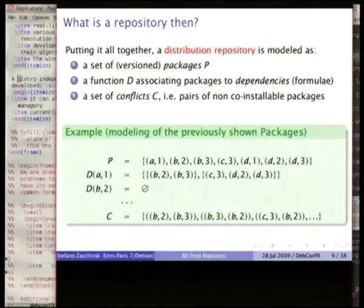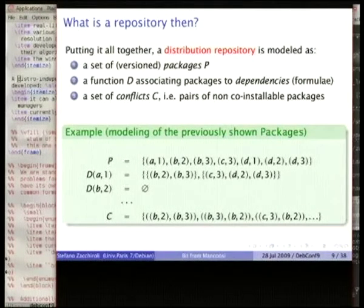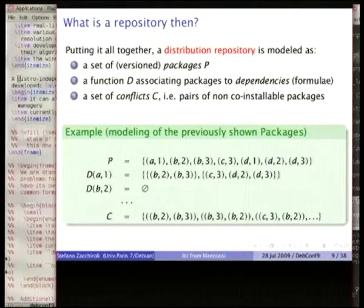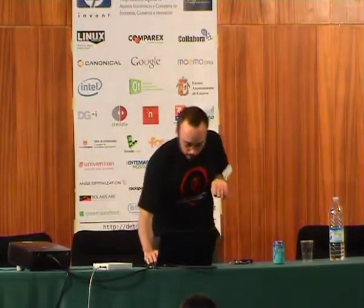How do you model a repository? Well, a repository becomes a set of packages. Each package in that repository is associated to a formula — a logic formula like the one I've shown before. And in addition to that, globally you define a set of conflicts: identifying in a given repository all pairs of packages which are not co-installable. Because we are used to declaring conflicts in only one way — a package declares a conflict towards another package — but the conflict is actually bidirectional. So even if we only say in one direction that package A conflicts with package B, that's actually true also in the other sense.